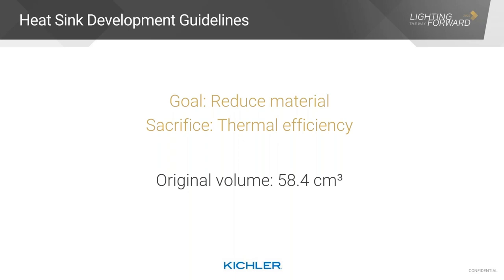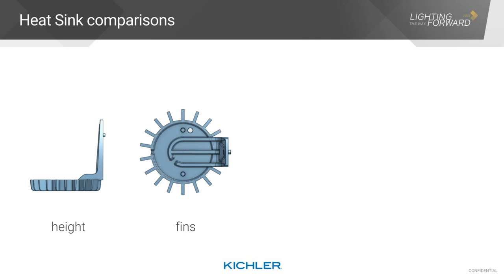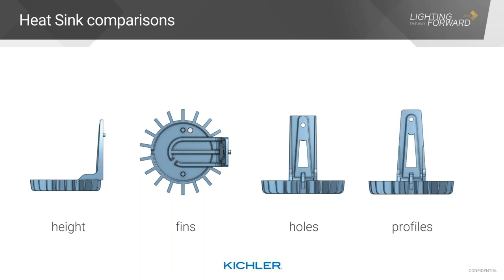Our heat sink development guidelines: our goal is to reduce costs through material savings, and we are willing to sacrifice thermal efficiency as long as it does not interfere with the constraints from our other components. For reference, the initial volume of the heat sink was 58.4 cubic centimeters. We had many variations of heat sinks — I'm only going to show a few examples. Changes we made included modifying the height of fins and ribbing, modifying the height of the overall component when we had the opportunity, changing the number of fins as well as the thickness of some of those fins, and adding cavities as well as through holes to multiple areas of this component. We also changed the profile in some instances to make the design as efficient as possible, specifically geared toward material reduction.